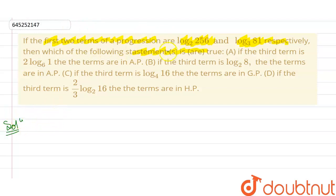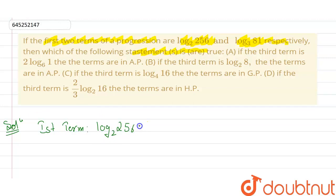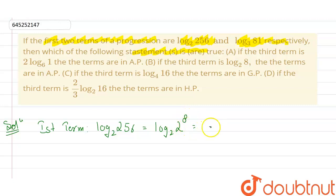The first term is given as log base 2 of 256. I can write this as log base 2 of 2 to the power of 8. Using the logarithm power rule, this becomes 8 log base 2 of 2.